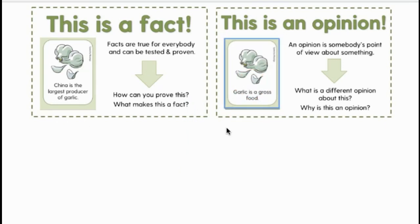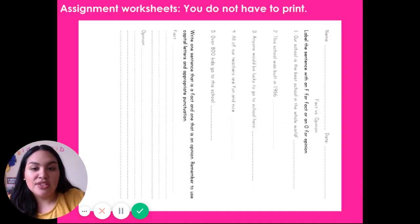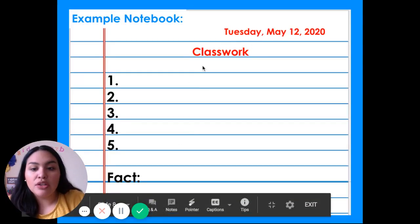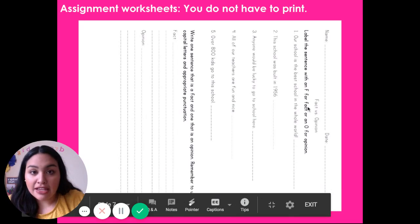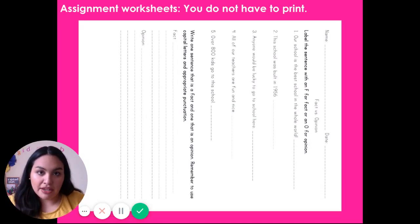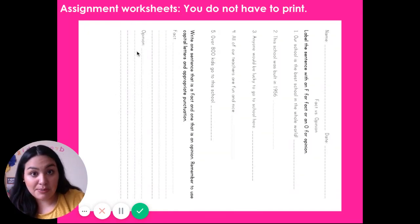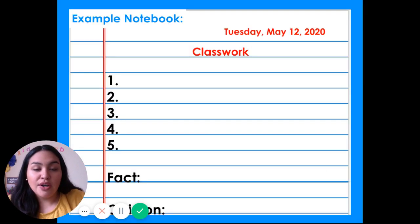Now we know the difference between a fact and an opinion. Your classwork is to complete the worksheet — remember, you do not have to print it. Take a picture of your work and submit it on ClassDojo. Here's the paper you can print if you want. I even put it here like an example notebook — if you don't want to print, you can do it like this. For questions one through five, you're going to tell me if it's a fact or an opinion. You can just write an F or an O. And then here, it wants you to write one sentence that is a fact and one sentence that is an opinion. I want to see if you guys are able to show the difference between a fact and an opinion. So that is your work for today.